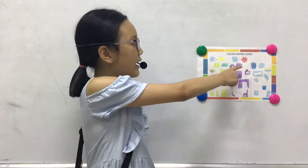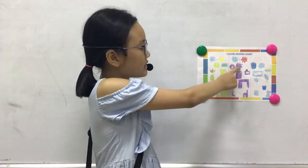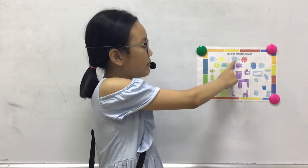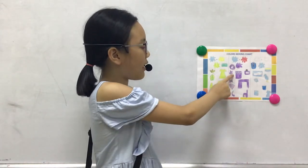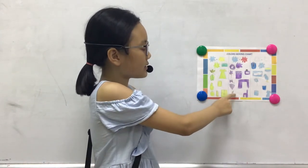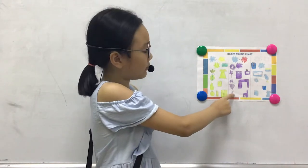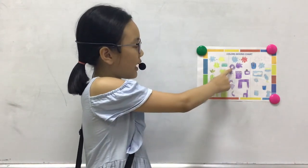My second color is purple. Purple is a secondary color. I mix blue and red to make purple. I can see purple in flowers, grapes, eggplants, and purple cabbage.